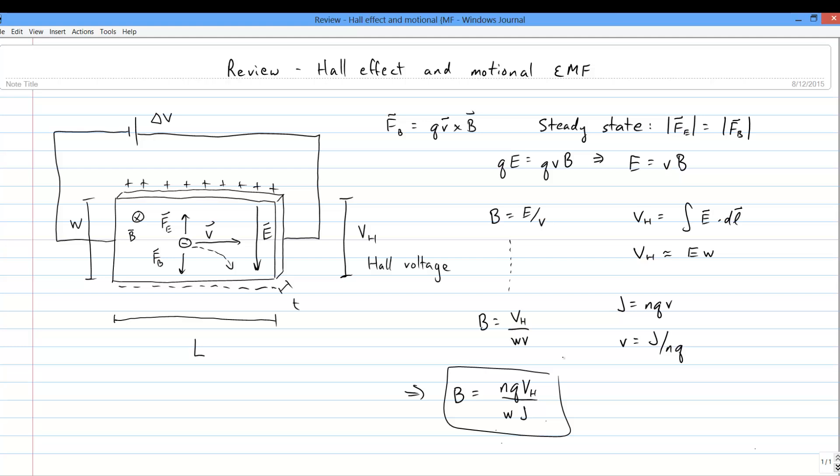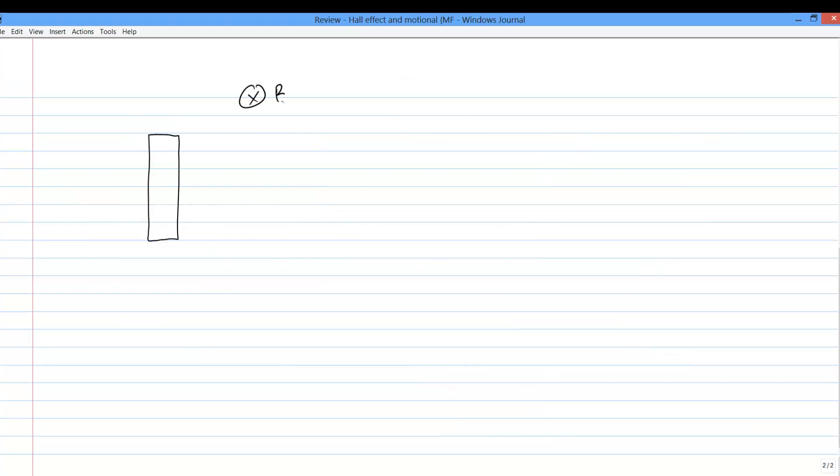Take what's known as Motional EMF. Instead of looking at a conductor in a circuit, let's look at a chunk of conducting metal by itself, but moving through a magnetic field. Maybe it represents an airplane with some metal wings or whatever, I'm not too picky.